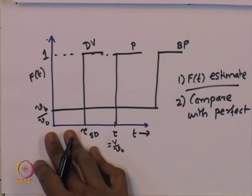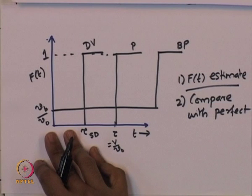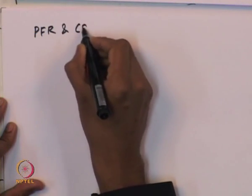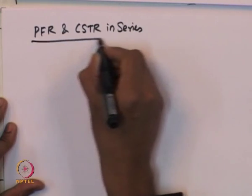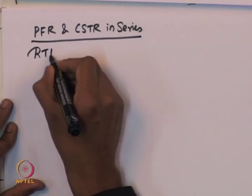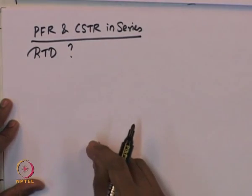This is the story for the single CSTR and the single plug flow reactor. Now let us look at the combination of reactors. We observed earlier that the RTD function is actually used to model the real reactors as a combination of ideal reactors. Let us take a very simple example — a combination of two ideal reactors — and consider the plug flow reactor and CSTR in series. What will be the RTD function for this case?